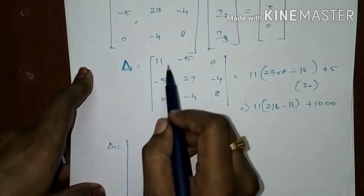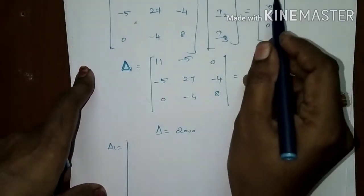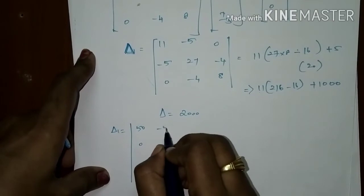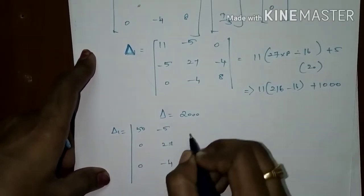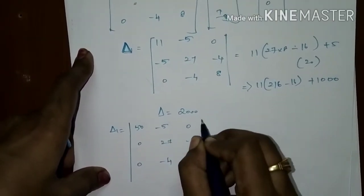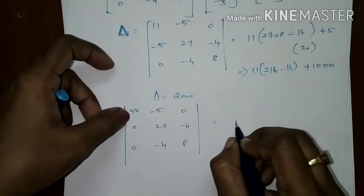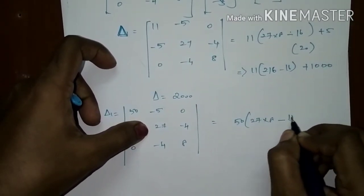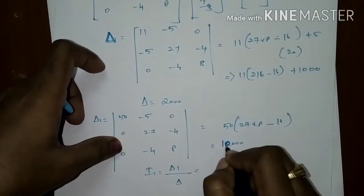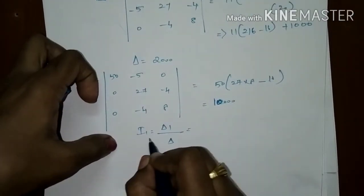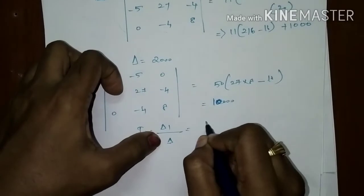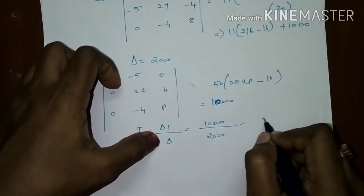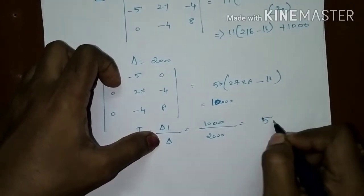Del1 is found by replacing the first column of the resistance matrix with the voltage source column [50, 0, 0], giving the matrix [50, −5, 0; 0, 27, −4; 0, −4, 8]. Expanding this: 50 × (27×8 − (−4)(−4)) = 50 × (216 − 16) = 50 × 200 = 10000. So del1 = 10000. I1 = del1 / del = 10000 / 2000 = 5 ampere.